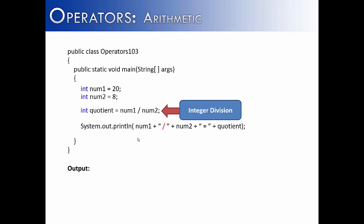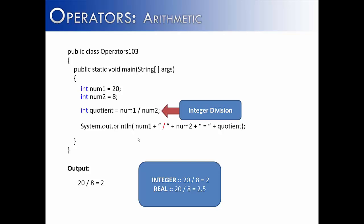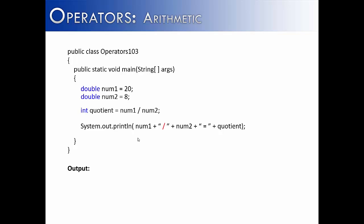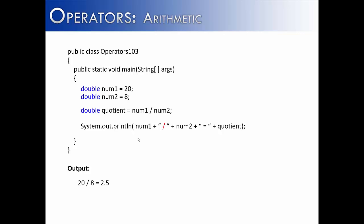Here's another example: what if I did 20 divided by 8? You can pause the video and see if you get the correct answer. The correct answer would be 2 — it doesn't matter that there would be a remainder or a decimal place; it's just going to truncate that off. Integer division yields 20 divided by 8 is 2, while real division yields 2.5. If you change both variables to real numbers but store the result in an int quotient, this would cause an error — a loss of precision error — because an int is less precise. So to get real division, store the result in a double quotient, and you would get 2.5.